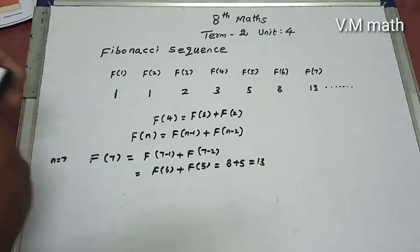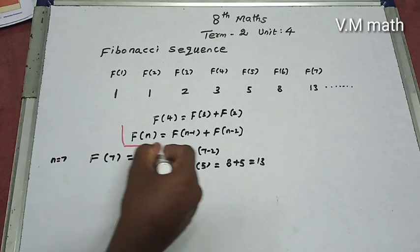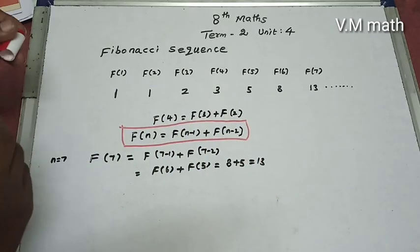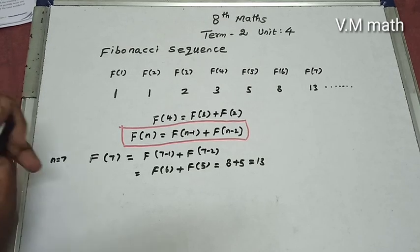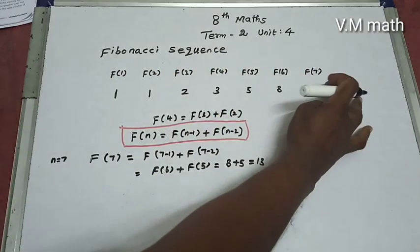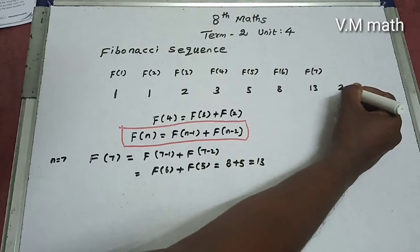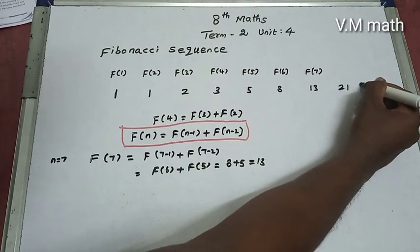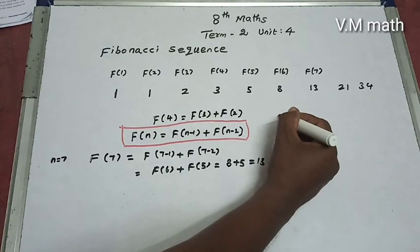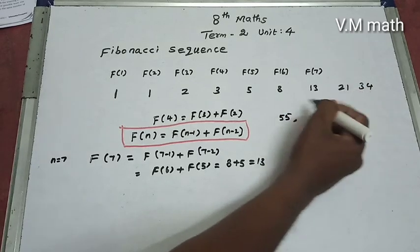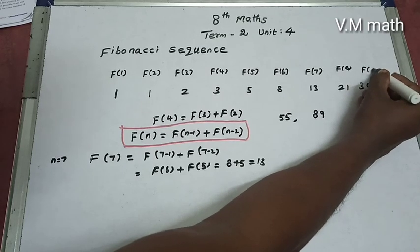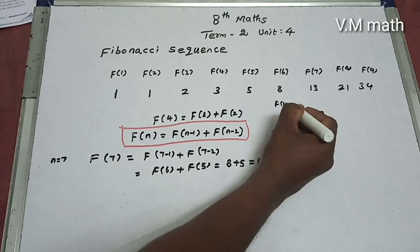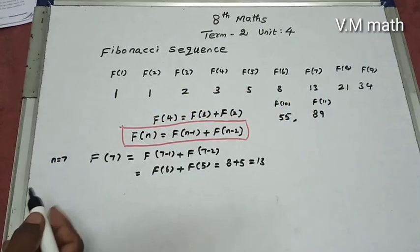This is the general form of the Fibonacci sequence: f(n) = f(n-1) + f(n-2). Using this, we can find any term — for example, f(10) and f(11) can be calculated by continuing the sequence.